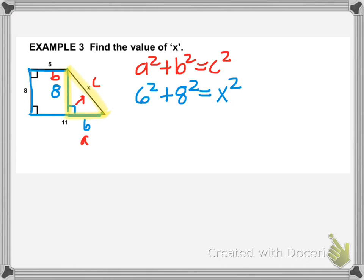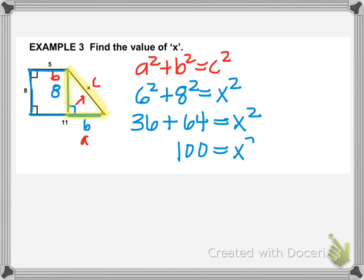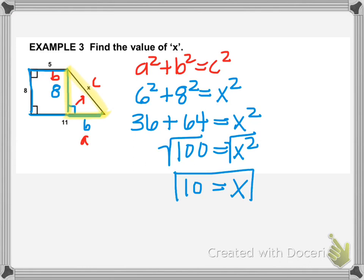Now we solve for X. We plug in: 6 squared is 36, 8 squared is 64, and that equals X squared. 36 plus 64 is 100. Whenever you have variable squared equals a number, take the square root of both sides. The square root of X squared is just X, and the square root of 100 is 10 because 10 times 10 is 100. So the length of that missing side is 10.